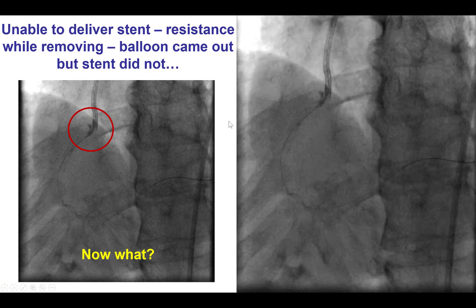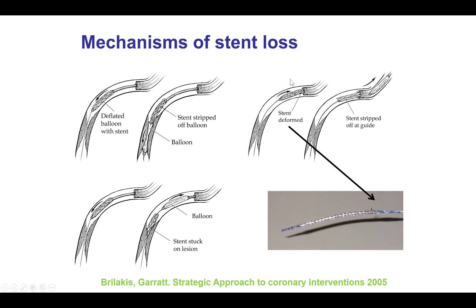So we have here a case of stent loss. The mechanism is usually deformation of the stent. During attempts to deliver the stent, sometimes there is deformation of the stent strut, and then when the stent is being retrieved into the guide catheter, this deformed part can get caught into the guide catheter, and then pulling it back, the balloon can come back but the stent remains within the coronary artery.